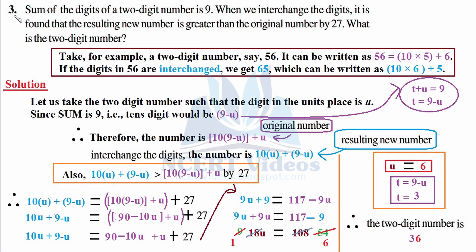Question number 3 of exercise 2.4, chapter 2, class 8, linear equations in one variable. Sum of the digits of a two-digit number is 9. When we interchange the digits, it is found that the resulting new number is greater than the original number by 27. What is the two-digit number?